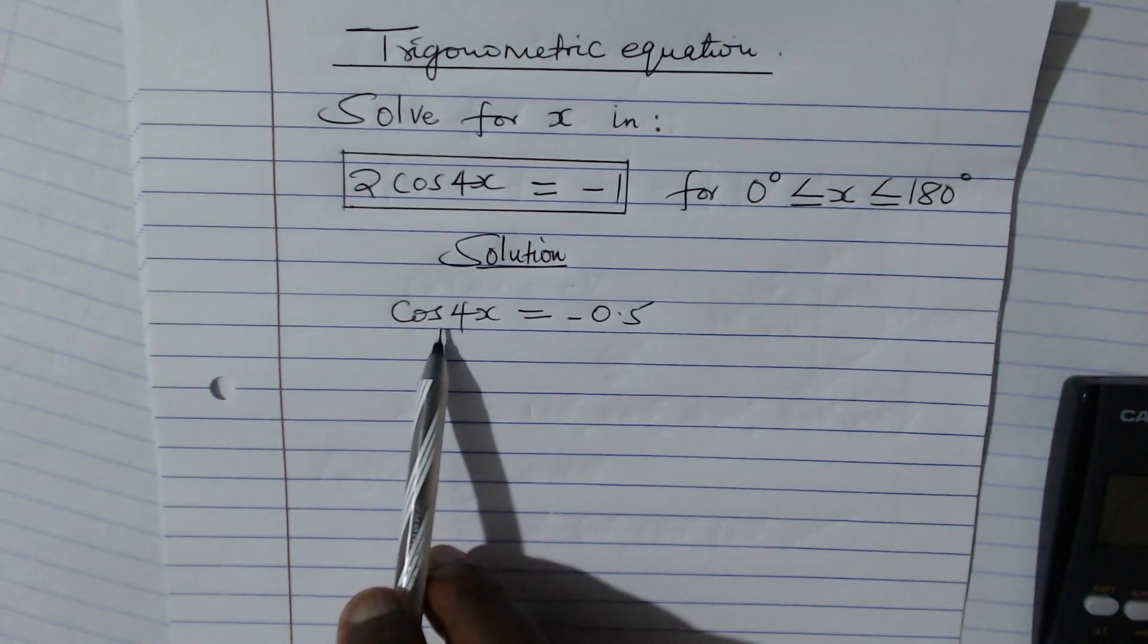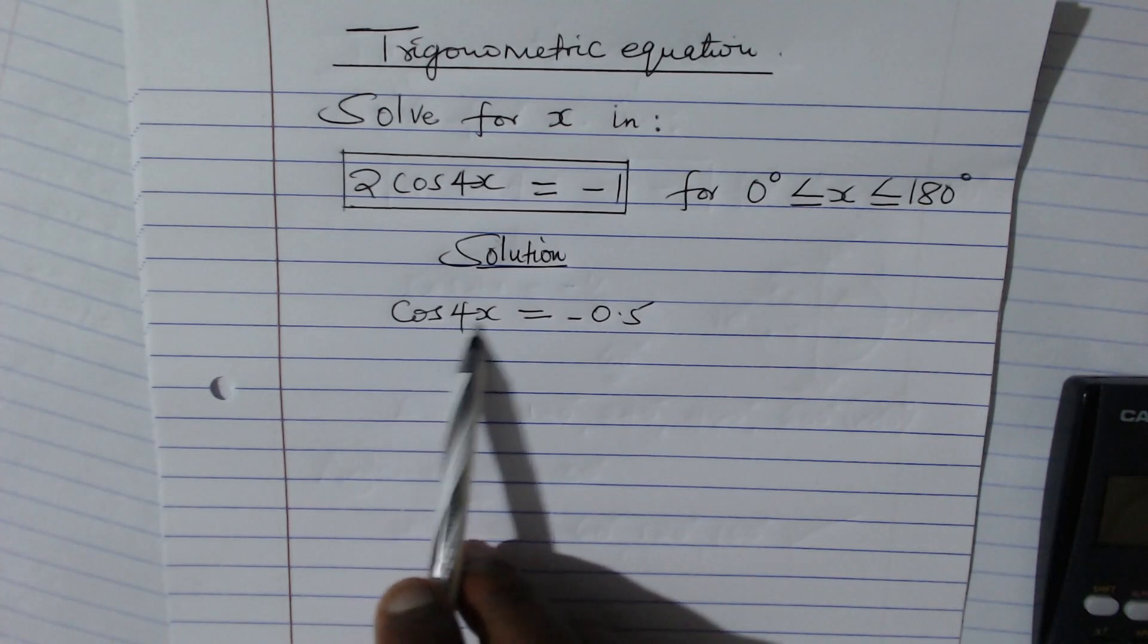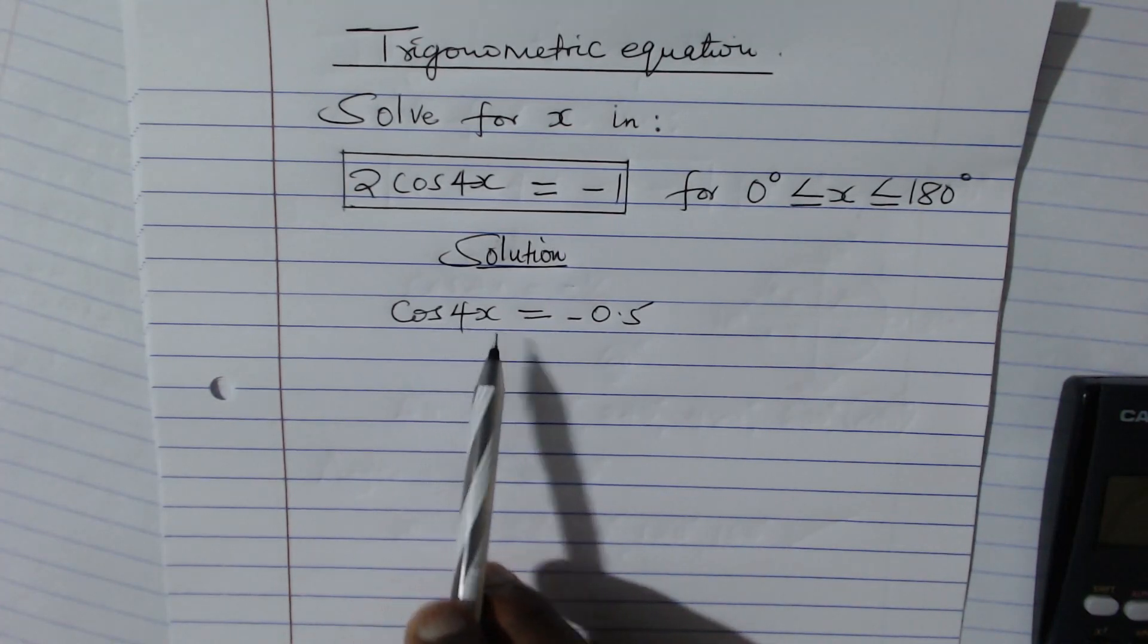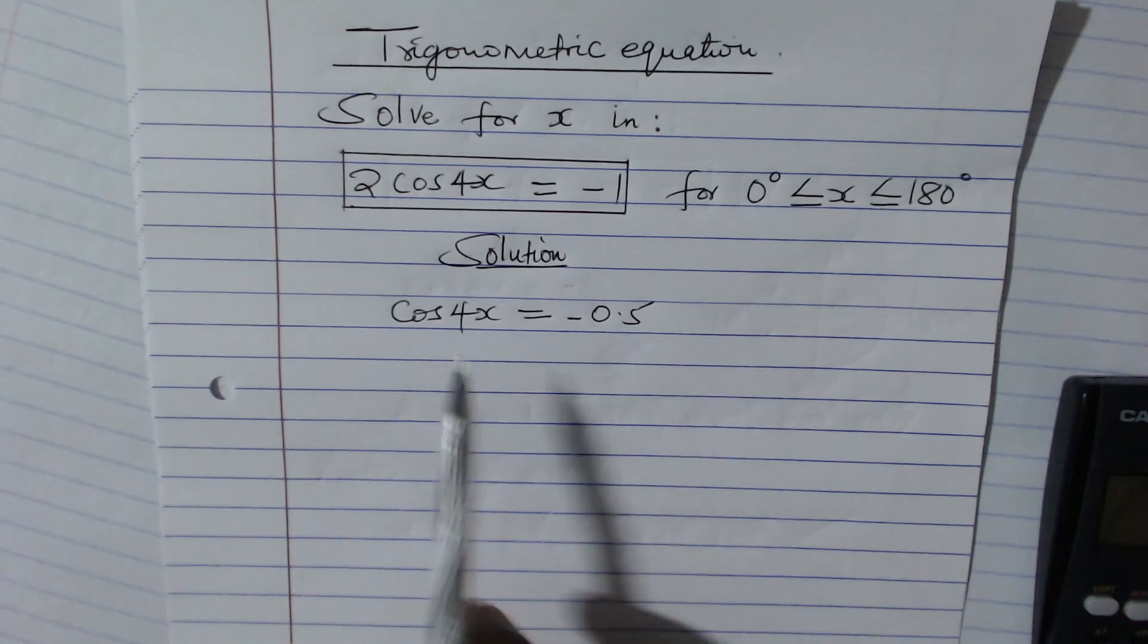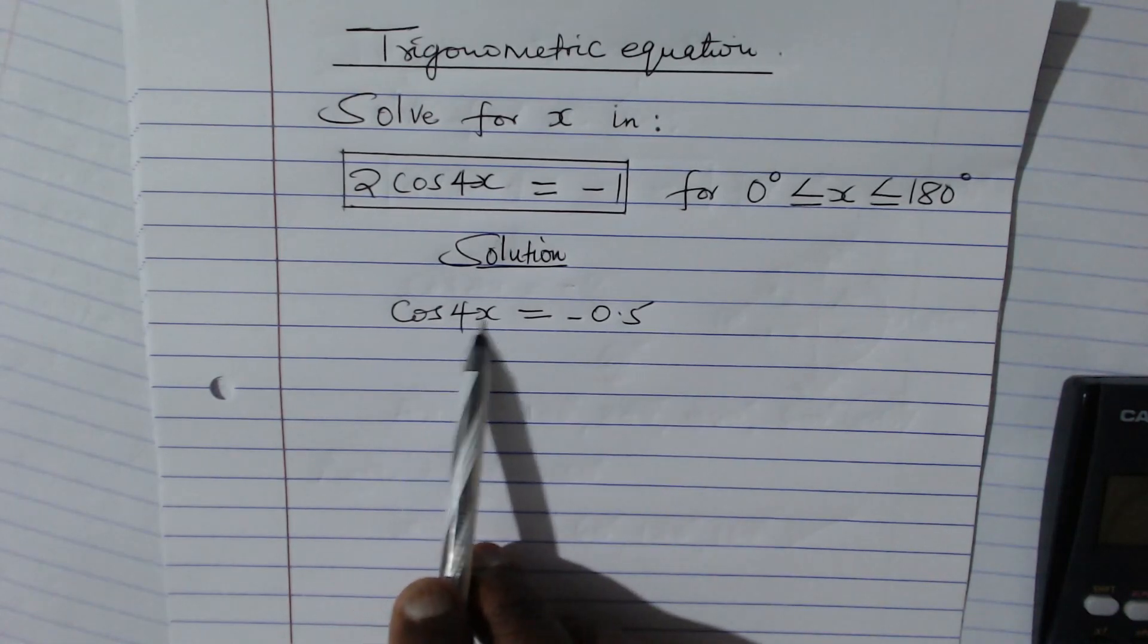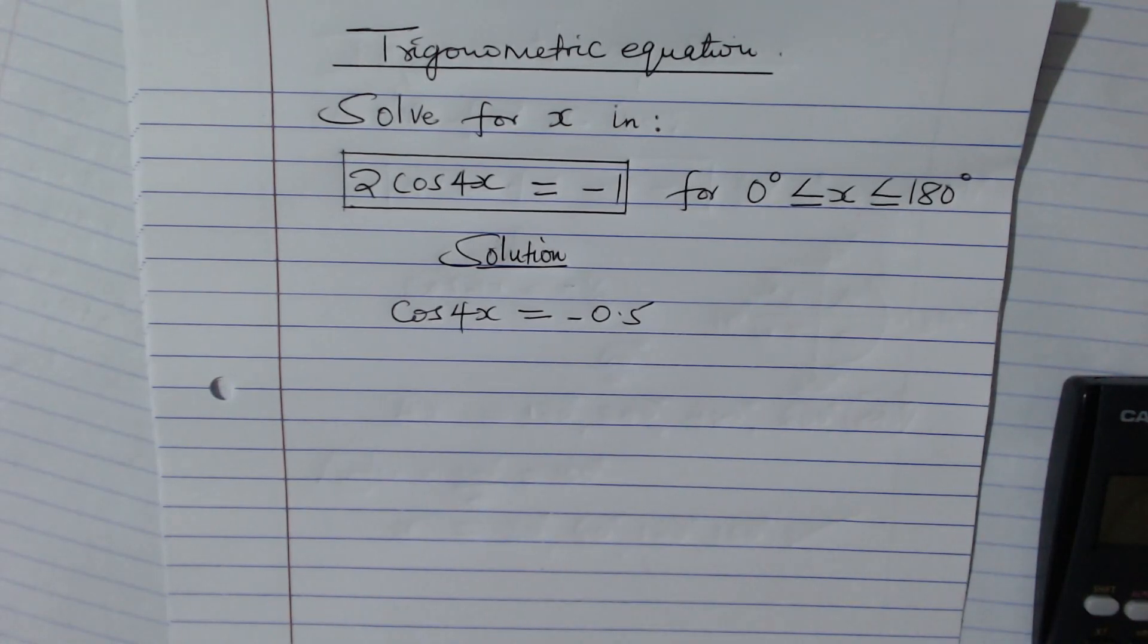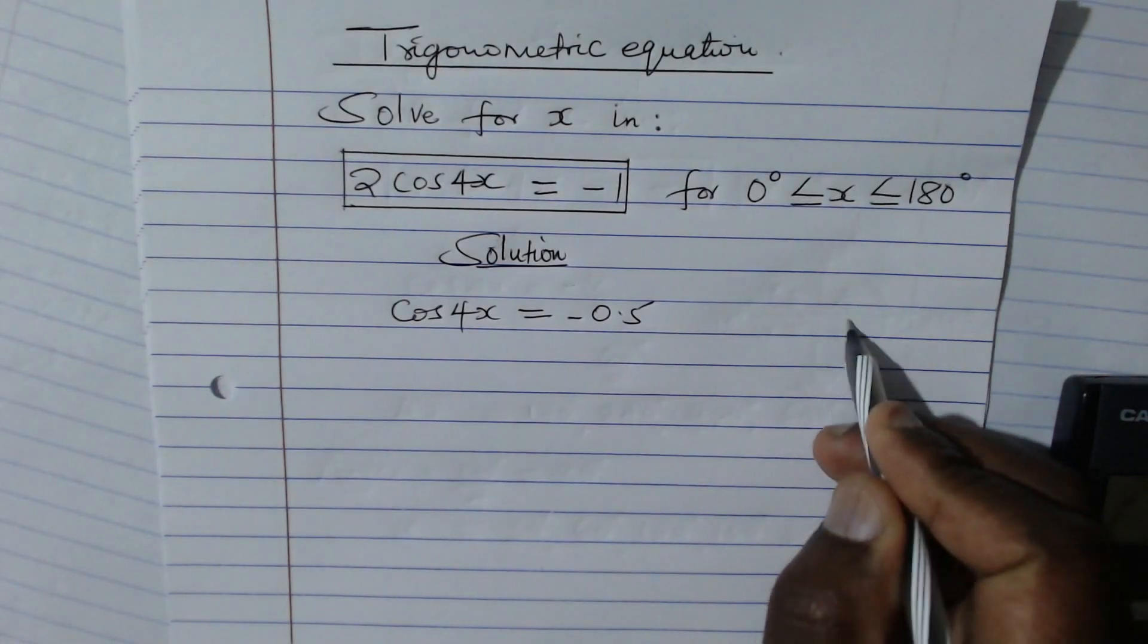Once we've done that, now we need to get rid of this cosine by getting the cos inverse of both sides so that you can remain with 4x on the left side. But before we do that, there's something I want to explain using the unit circle.